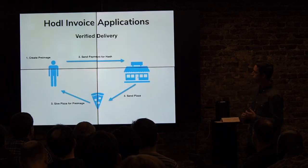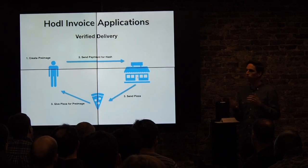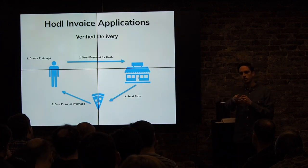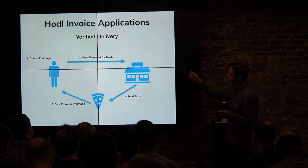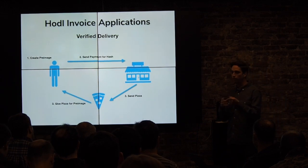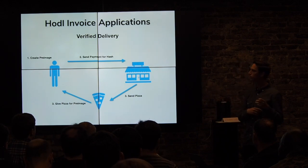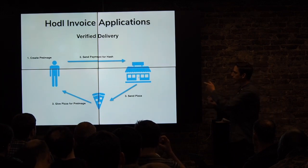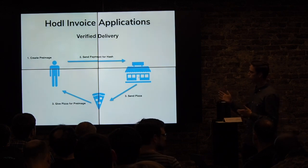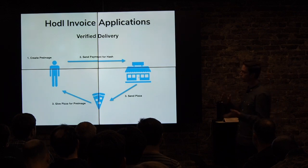A more general version of both of those is what I call verified delivery. Basically it's any system where you as the customer create a pre-image on your own, and then you send a payment to some service provider — like a pizza place — using the hash. The pizza place can't actually cash that payment yet. What they do is deliver the pizza to you, and the delivery person gets the pre-image from you. The delivery person can verify that the pre-image corresponds to the hash offline — they just do a SHA-256 computation. In traditional finance this would be called delivery versus payment settlement, and this is probably the most sophisticated system in the world to do that.